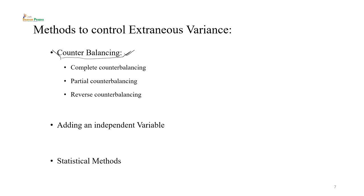Counterbalancing को एक example से समझते हैं। यदि हमारे पास दो tasks हैं — Task A और Task B — और हमें order effect को control करना हो, तो पहली बार Task A दिया फिर Task B, तो अगली condition में B को first और A को second कर देंगे। इस प्रकार A और B के order को change कर balance किया। इस प्रकार extraneous variance जो carry over या order के effect से आता है, उसे balance कर पाते हैं।